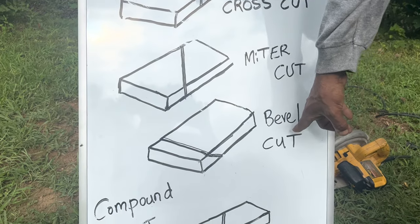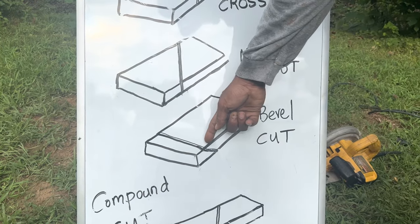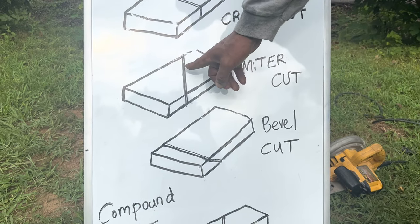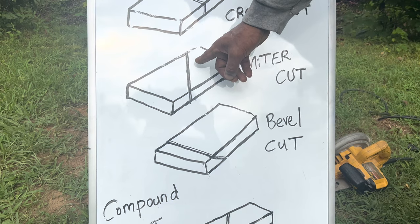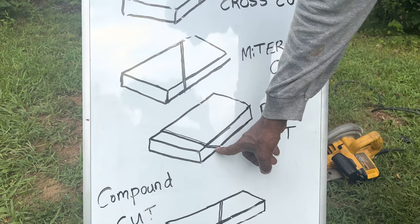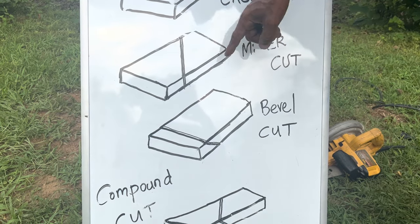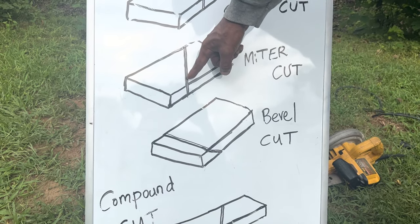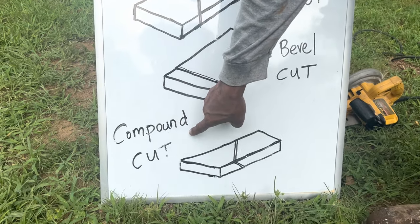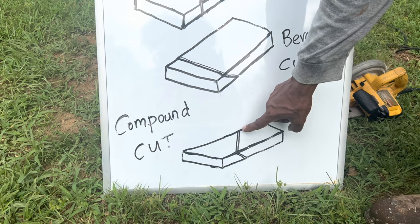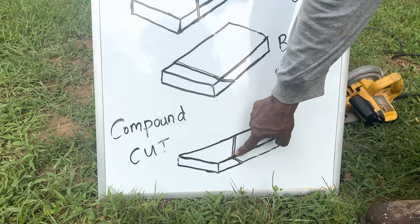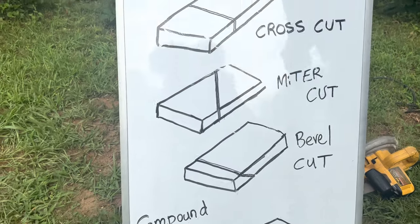Now the bevel cut — you see this is a square cut across the face, but it's an angle cut on your edge, opposite to the miter. The angle on a bevel is on the edge. On a miter, the angle is on the face. When you put these two cuts together you get a compound miter cut, which is an angle cut on the face and an angle cut through the edge of your lumber.